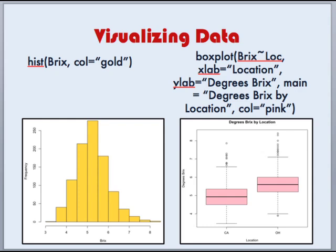We might also be interested to see how degrees BRICS vary by location, so I've done this in a box plot. I've also put some labels on my graph: XLAB and YLAB to name the X and Y axes, and MAIN to put a main title on my graph. This time around, I decided to color my boxes in pink.